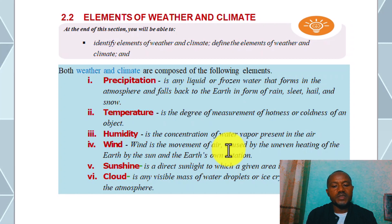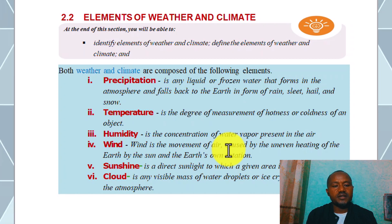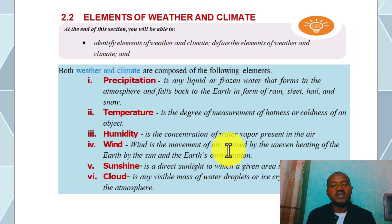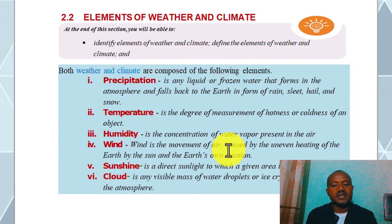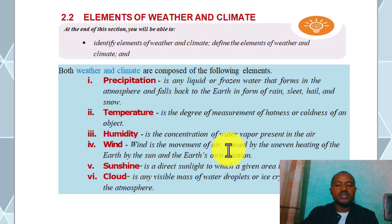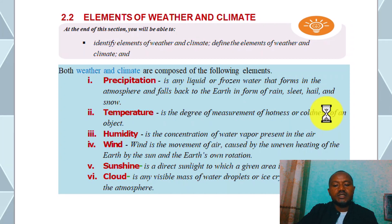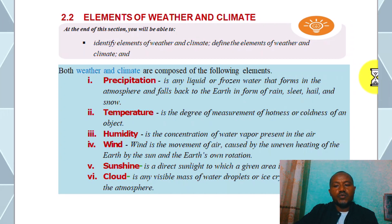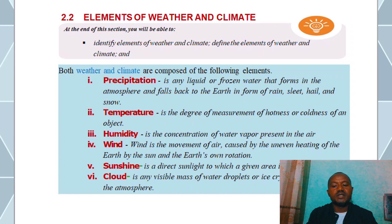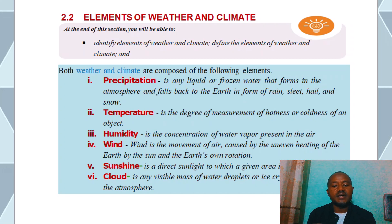Wind is the movement of air caused by the uneven heating of the earth by the sun and the earth's own rotation. Wind may be driven by the uneven heating of the air.